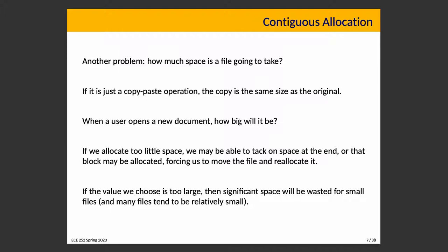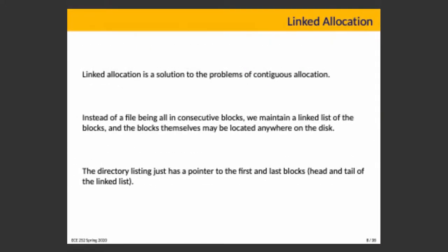Another problem with contiguous allocation is not knowing in advance how much space a file will take. If we're copying a file, we know the size. If we're downloading, the server tells us. But if a user opens a document, we don't know if it's a short note or a master's thesis — wildly different sizes. If we allocate too little, we have to tack on more space, and if there's an adjacent file, we may have to move and reallocate the file entirely to keep it contiguous.